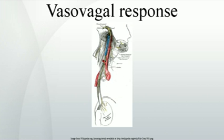Vasovagal syncope more commonly affects young adults. There are different syncope syndromes which all fall under the umbrella of vasovagal syncope. The common element among these conditions is the central mechanism leading to loss of consciousness, while the differences are in the factors that trigger this mechanism.